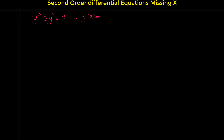We have these initial conditions. The value of the function we are looking for at point 0 is 2, and the derivative of the function at point 0 is 4.